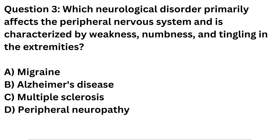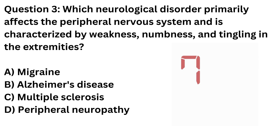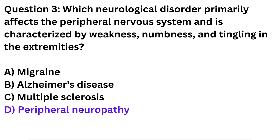Question 3. Which neurological disorder primarily affects the peripheral nervous system and is characterized by weakness, numbness, and tingling in the extremities? a. Migraine. b. Alzheimer's disease. c. Multiple sclerosis. d. Peripheral neuropathy. Correct answer: d. Peripheral neuropathy.